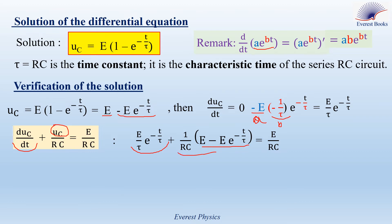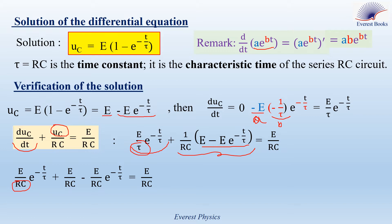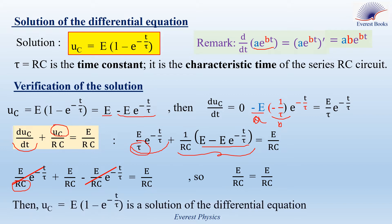Expanding this equation and replacing tau by R times C, we observe that the first and third terms have equal magnitude but opposite signs, so they cancel each other. We then have E over RC equals E over RC. Since the left side equals the right side, we conclude that UC equals E times (1 minus exponential of minus T over tau) is indeed the solution of the differential equation.